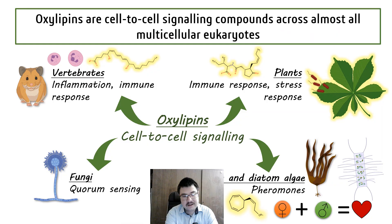Lipoxygenases are enzymes that oxygenate polyunsaturated fatty acids and form oxylipins. Oxylipins are cell-to-cell signaling chemicals that are widespread across almost all multicellular eukaryotes — vertebrates, plants, fungi and some algae. In all these kingdoms, oxylipins perform significant signaling functions.